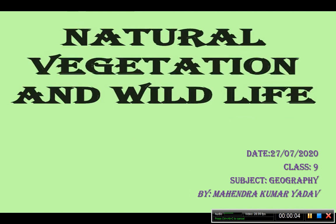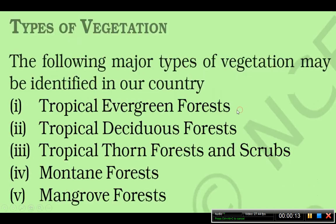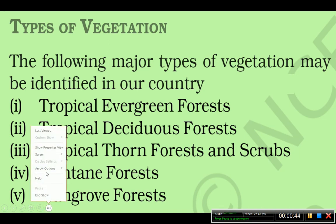Good morning students. As we have already started the chapter Natural Vegetation and Wildlife, we are going to continue some more topics from that chapter. The following major types of vegetation may be identified in our country: tropical evergreen forest, tropical deciduous forest, tropical thorn forest and scrubs, mountain forest, and mangrove forest.